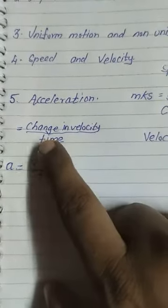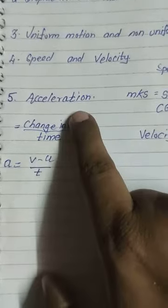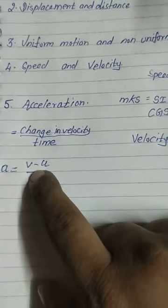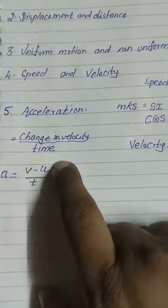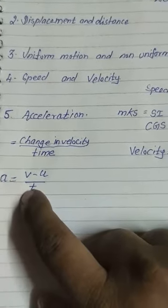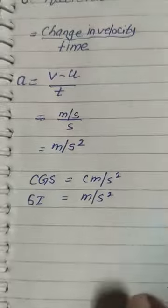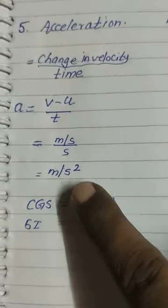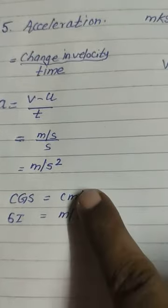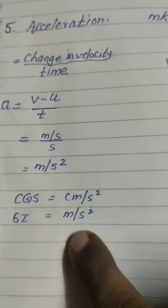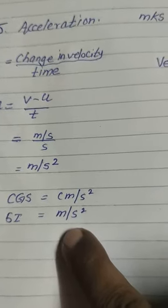Now see acceleration. Acceleration is the rate of change of velocity in time. If initial velocity is u and final velocity is v, then acceleration is v minus u upon t. The CGS unit of acceleration is centimeter per second square, and the SI unit is meter per second square.